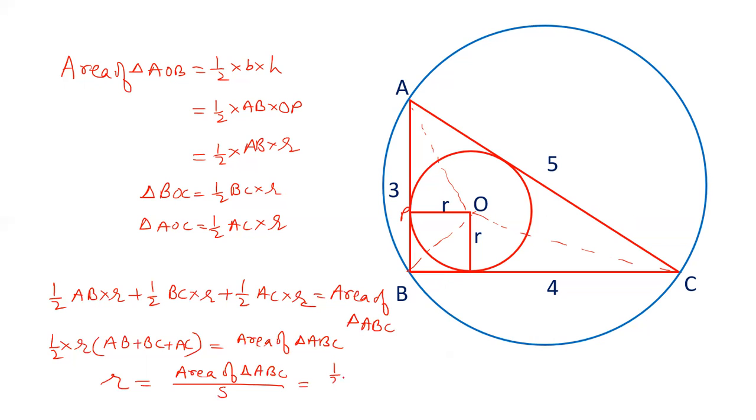Here area of triangle is half 4 into 3. And semi-perimeter is half of 4 plus 3 plus 5. Half cancelled out. 4, 3 is 12. 4 plus 3 plus 5 is 12. So r is equal to 1.